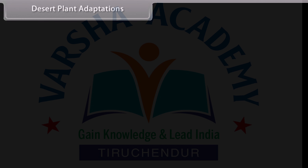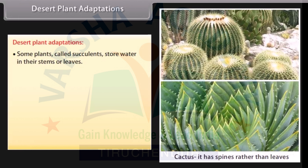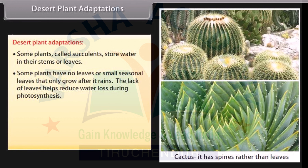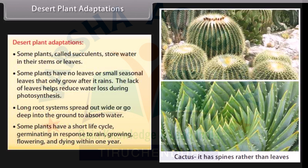Desert plant adaptations: Some plants called succulents store water in their stems or leaves. Some plants have no leaves, or small seasonal leaves that only grow after it rains — the lack of leaves helps reduce water loss during photosynthesis. Long root systems spread out wide or go deep into the ground to absorb water. Some plants have a short life cycle, germinating in response to rain, growing, flowering, and dying within one year.